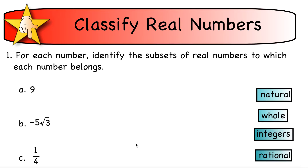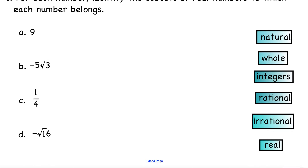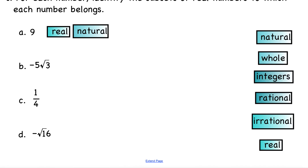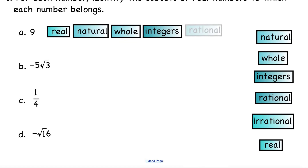What you need to be able to do now is classify real numbers. So if I give you a real number like 9, can you identify which subsets it belongs to? All of these are going to be real numbers. Is it a natural number? Yes, it's one of those counting numbers. Is it a whole number? Yes. Is it an integer? Also yes — remember, integers include the whole numbers. It's also a rational number; it can be represented as a fraction, like 9 over 1 or 18 over 2. Since it's rational, it cannot be irrational — there are no numbers that are both. So those are all the subsets that the number 9 belongs to.